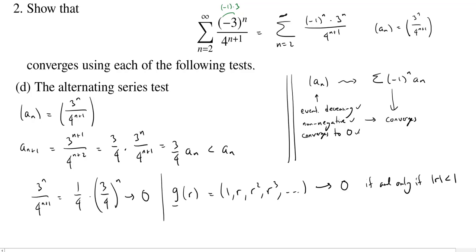Those are the hypotheses that we need to check for the sequence. And now, by the alternating series test, the original alternating series. So now I have to put in this minus 1 to the n times 3 to the n over 4 to the n plus 1 converges. Okay. So let's do the questions.